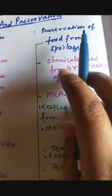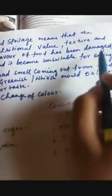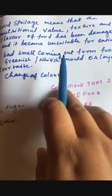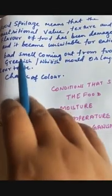Second part is preservation of food. Preservation of food means making food or saving food from spoilage. What is this spoilage? Spoilage means that the nutritional value, texture and flavor of the food has been damaged and it has now become unsuitable for eating. That means you cannot eat a spoiled food. If you eat a spoiled food then you will suffer from diseases like food poisoning.